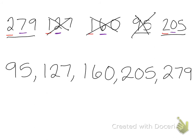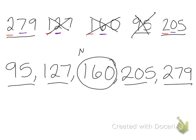After ordering the numbers from least to greatest, I can find the middle number. In this case that's going to be 160, because I have two numbers on the right and two numbers on the left. Mathematicians call this number the median. The median is the middle number in a list of numbers arranged from least to greatest.